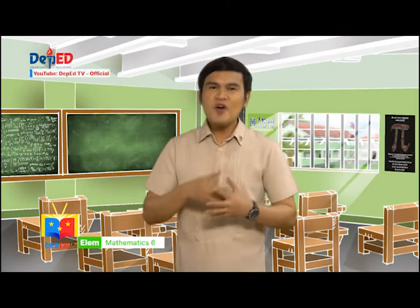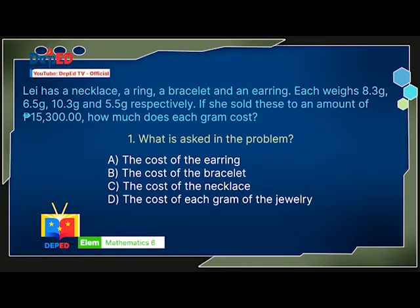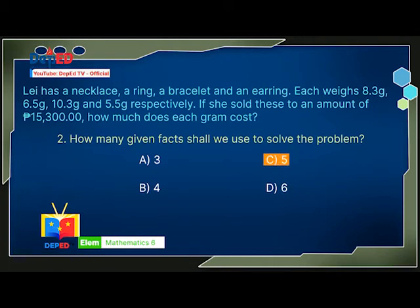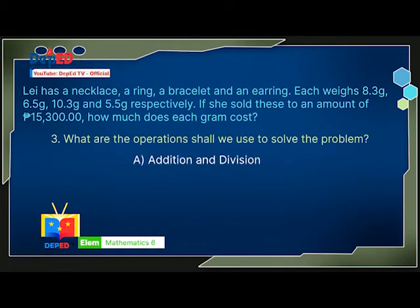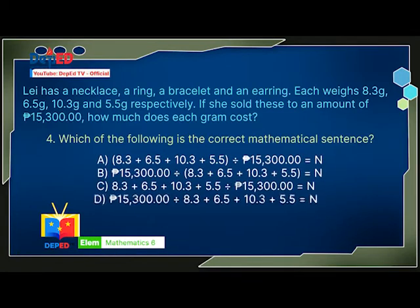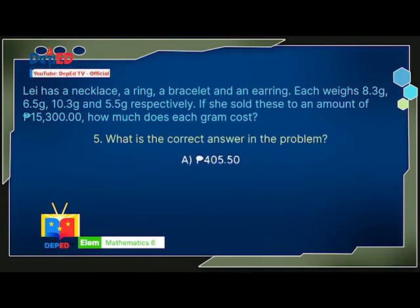Let's see which of you succeeded today. Let's check your answers. Number 1: the correct answer is letter D. Number 2: the correct answer is letter C, 5. Number 3: the correct answer is letter A, addition and division. Number 4: the correct answer is letter B — 15,300 pesos divided by (8.3 plus 6.5 plus 10.3 plus 5.5) equals N. And number 5: the correct answer is letter B, 500 pesos.